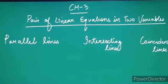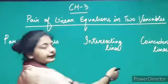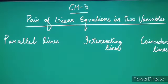As you know, we have three types of lines: we have parallel lines, we have intersecting lines, and we have coincidental lines.